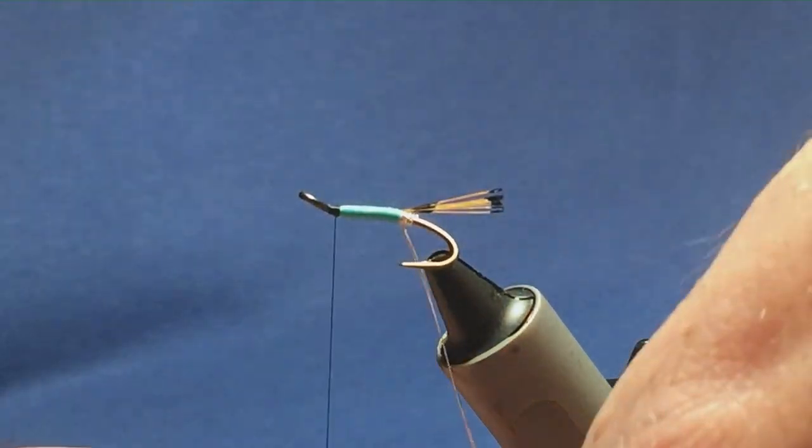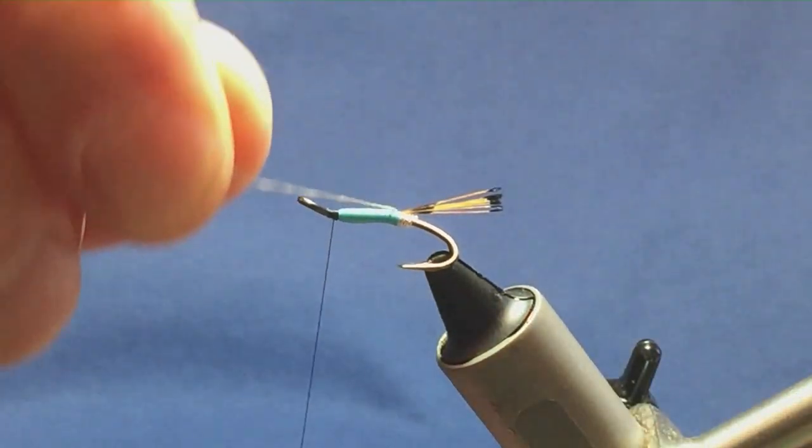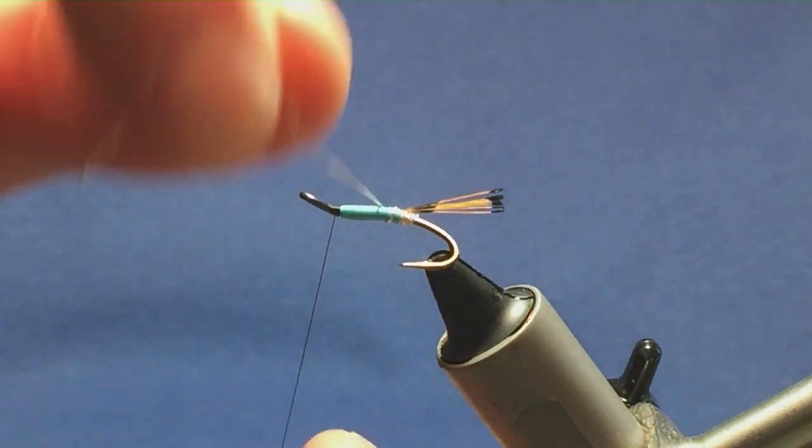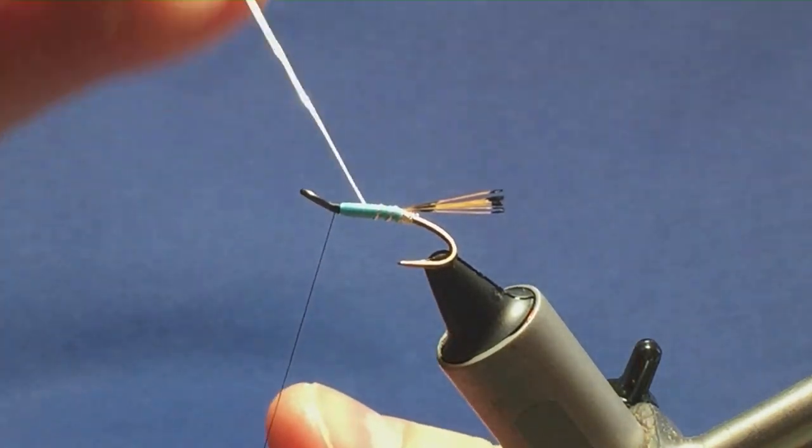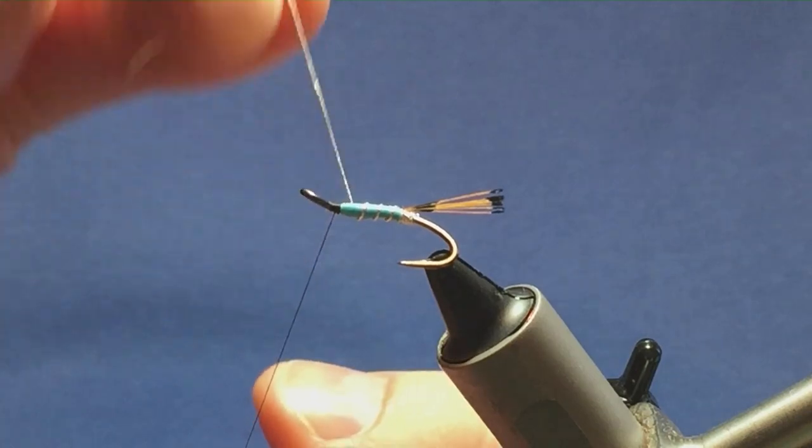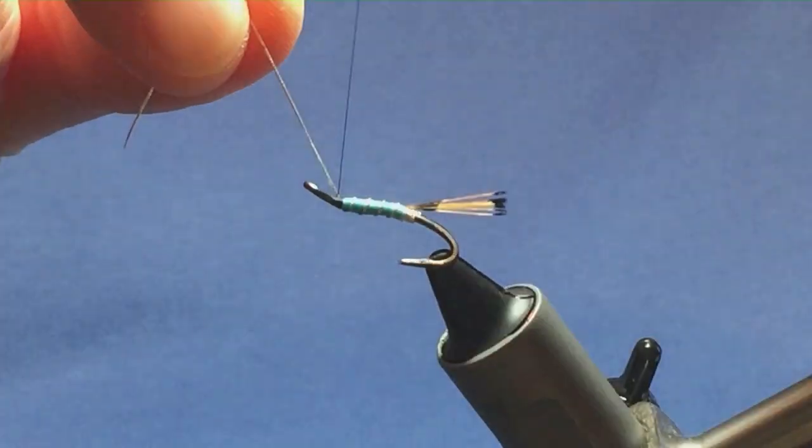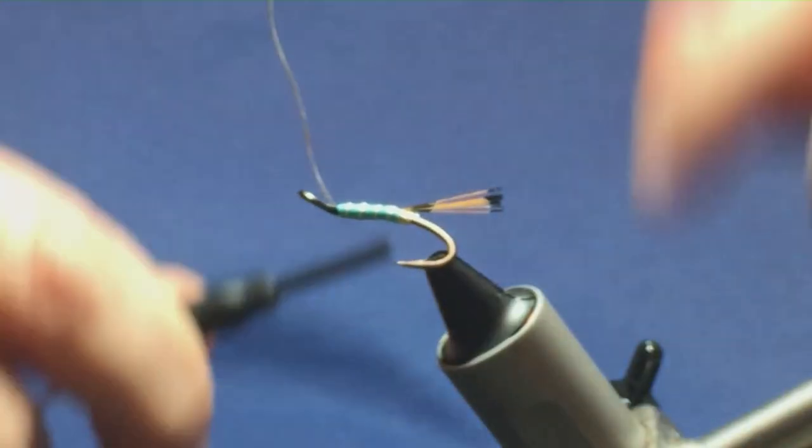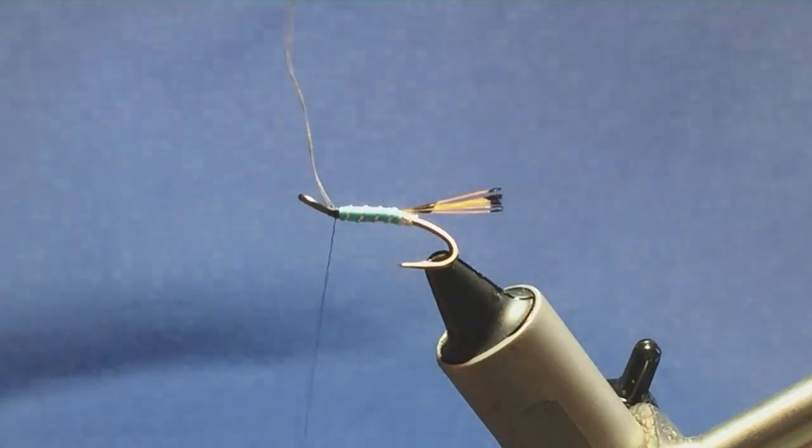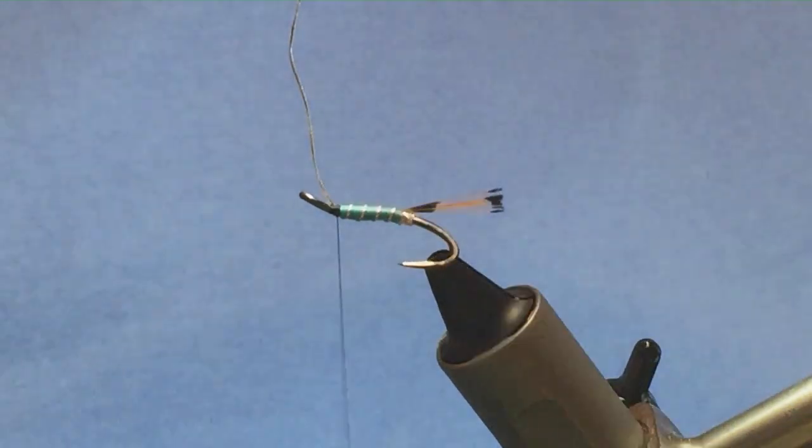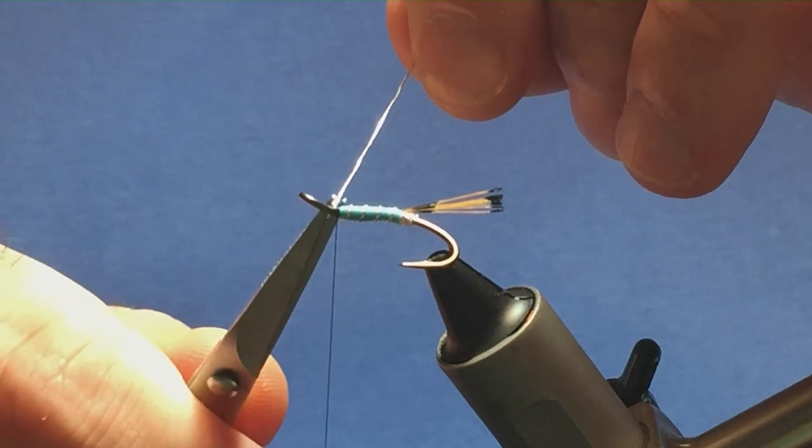Then we can bring up our rib. You've got four turns of the oval silver tinsel onto the body, up to there. Follow it around with your thread. One turn in to hold. A couple of turns to secure. Then just come in and remove the excess.